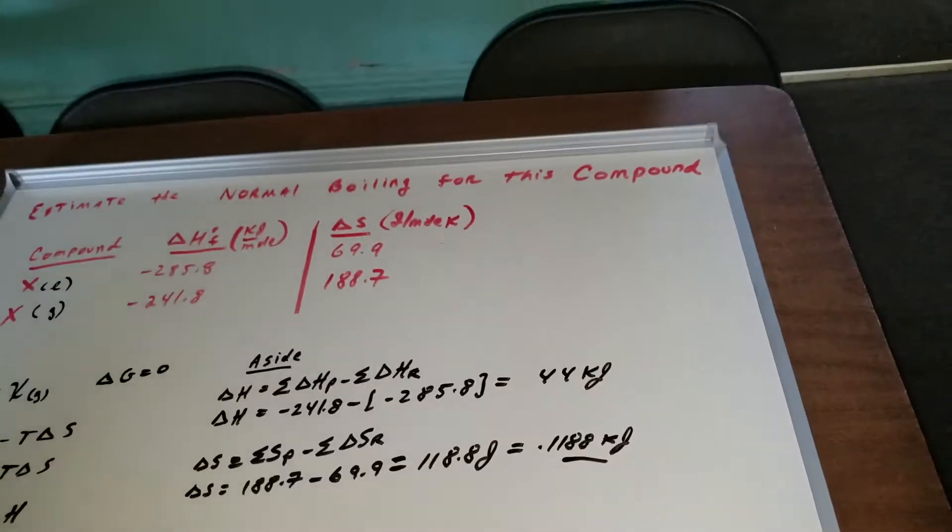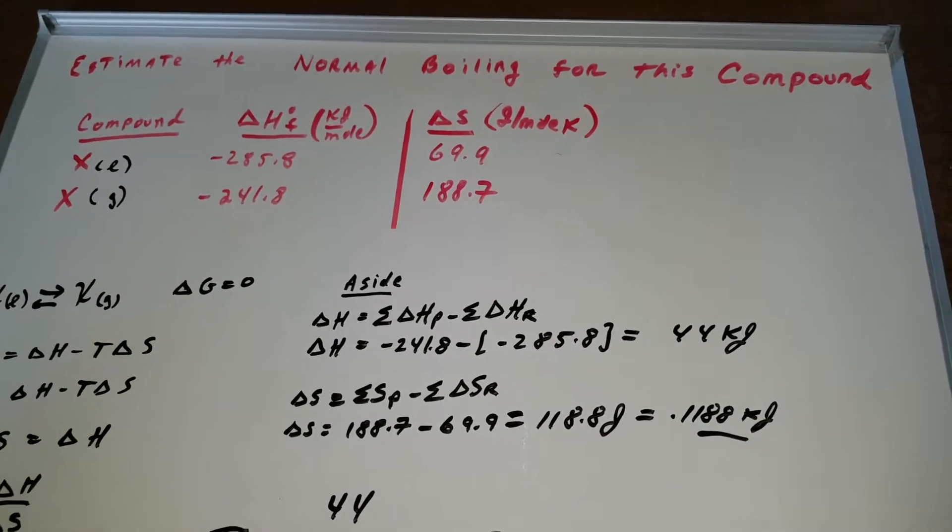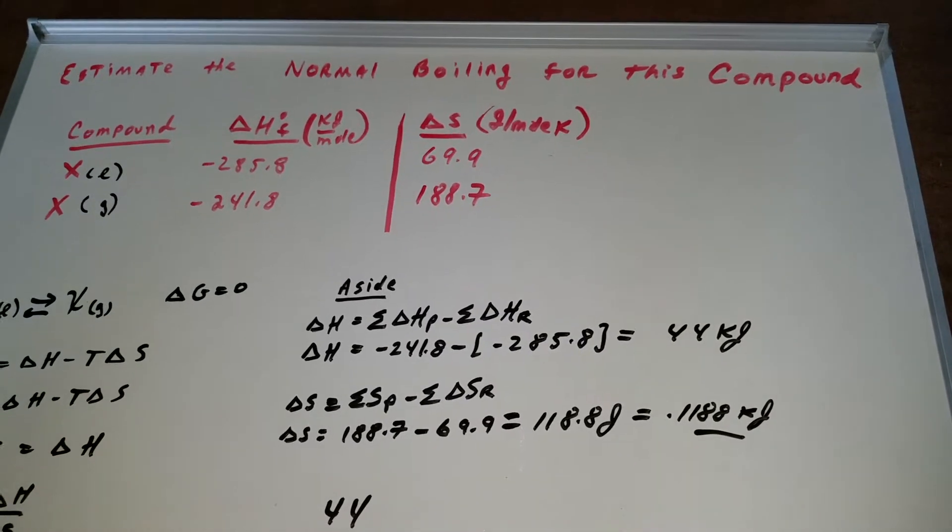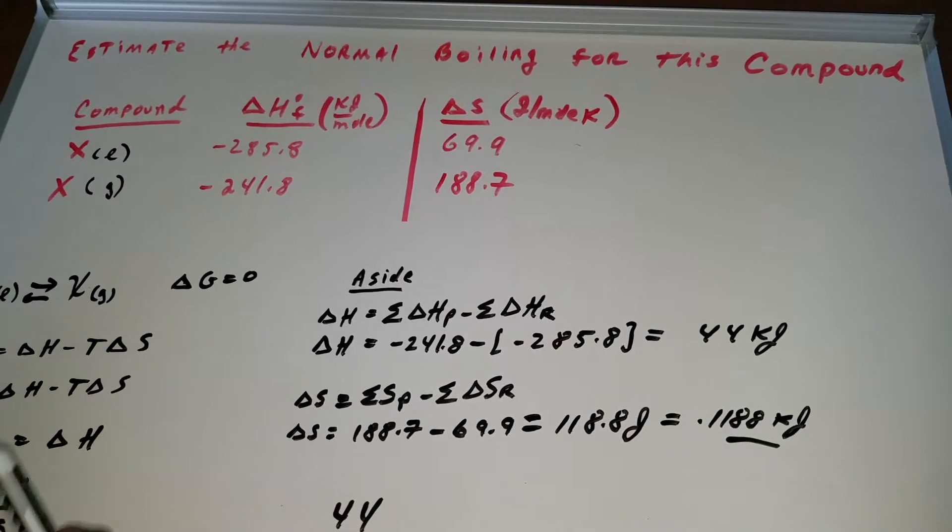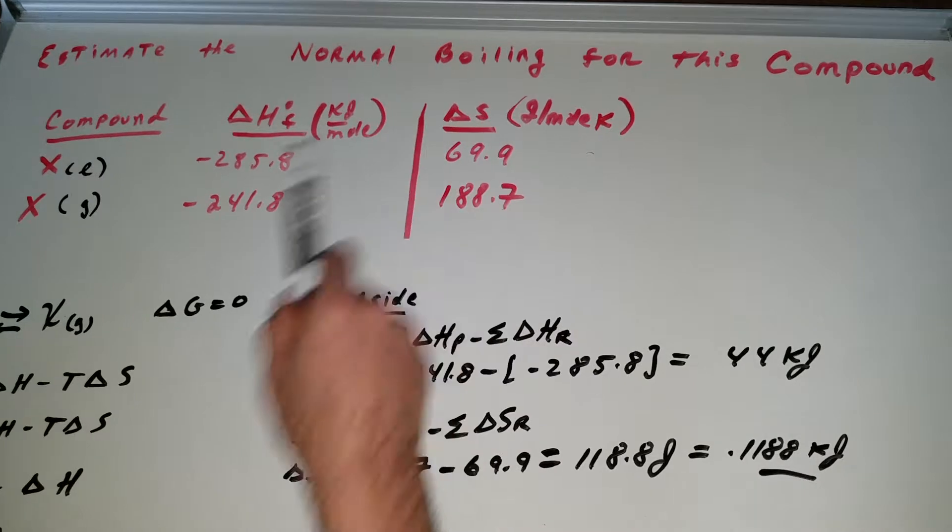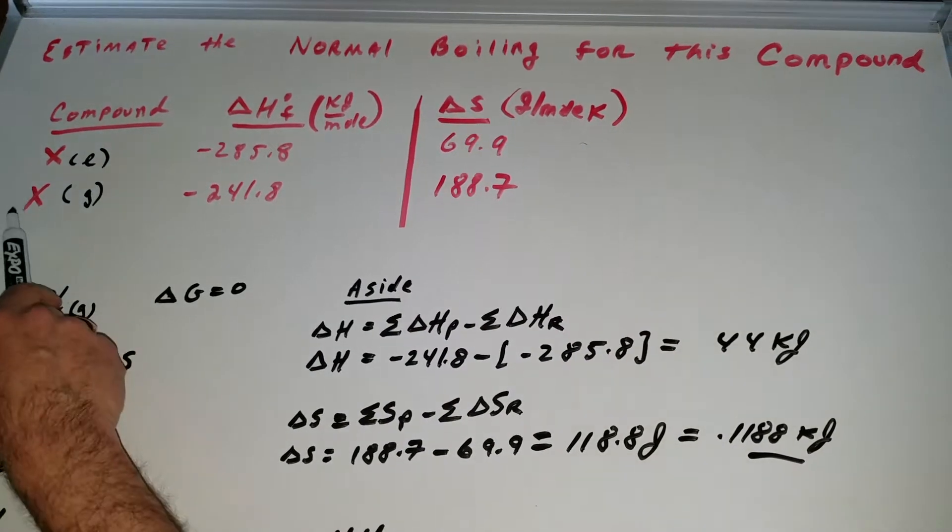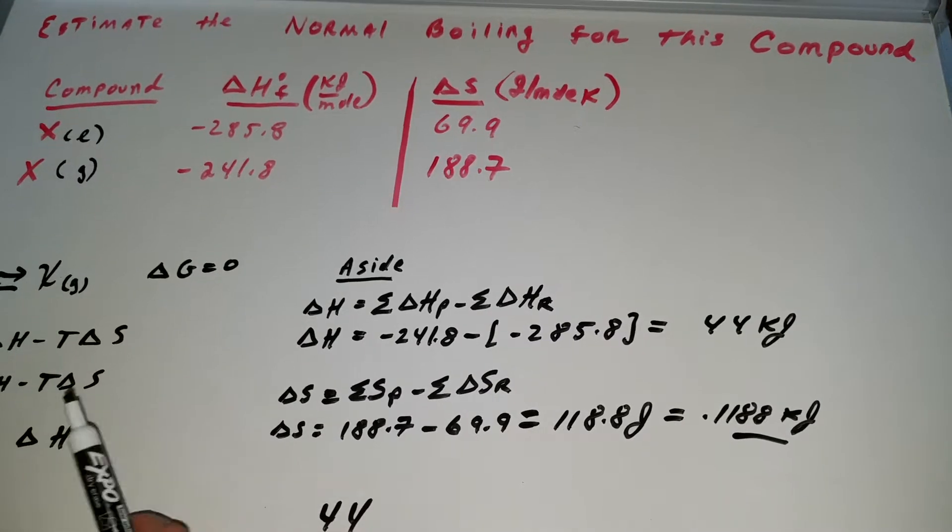What we're going to do here is estimate the boiling point for a compound using thermodynamic data. Now the first thing I did is I gave you a compound, a liquid, I gave you the heat of formation and the entropy. I gave you the gaseous form of it, the heat of formation and the entropy.